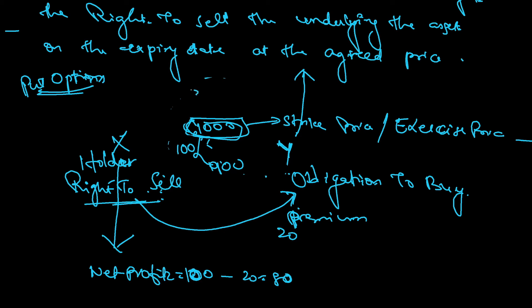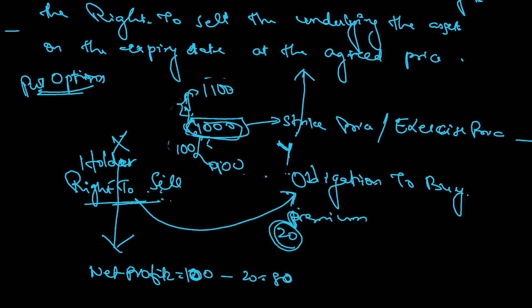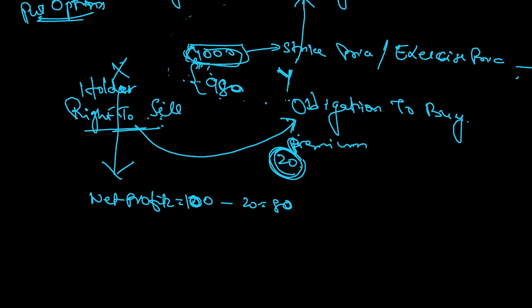If the price goes to 1100, he will simply not execute the contract, so his loss will be only the premium. If the spot price is beyond the strike price, the holder will not execute the contract and will let the option expire. His maximum loss is only the premium. If the spot price is around 998, he will sell for 1000 and incur 20 profit, but he already paid 20 as premium, so he will neither have profit nor loss — that is his breakeven point.